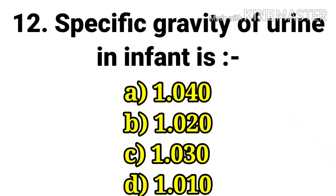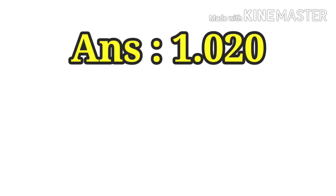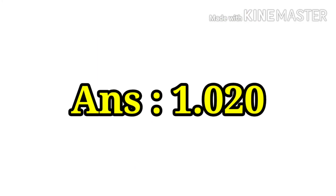The next question: specific gravity of urine in an infant — options are 1.040, 1.020, 1.030, and 1.010. The answer is 1.020.